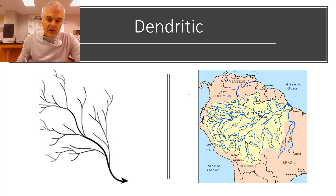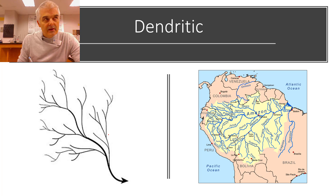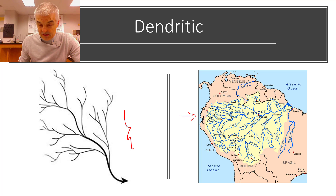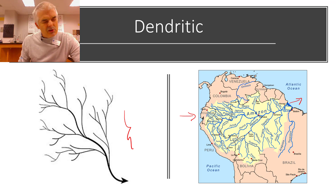The dendritic pattern, like what we just saw, looks like dendrites — like a tree. It kind of looks like trees with leaves, and a classic example is the Amazon. Do you see how the Amazon looks dendritic with all these tributaries? This is the Amazon basin, or Amazon drainage basin, sometimes also called the Amazon watershed. That's the dendritic pattern.